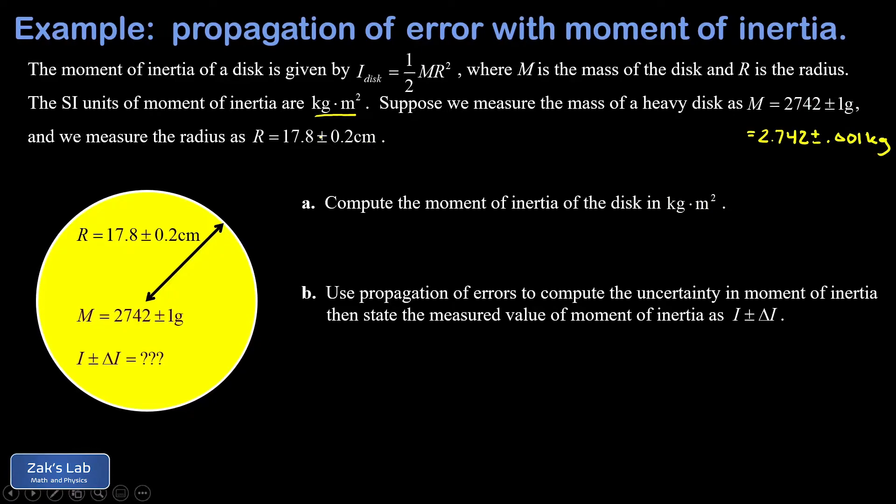The radius measurement has a similar issue—it's given to us in centimeters and we've got to convert that to meters. So this time we shift our decimal place twice and I get 0.178 plus or minus 0.002 meters. We're given the formula for the moment of inertia of a heavy disc as one half MR squared.